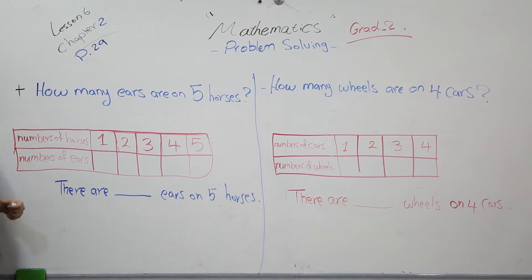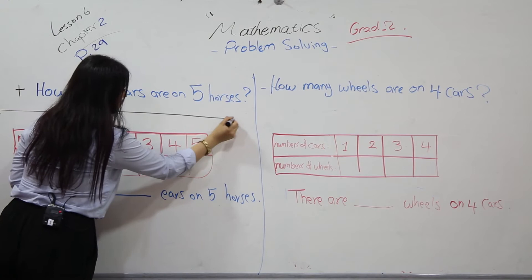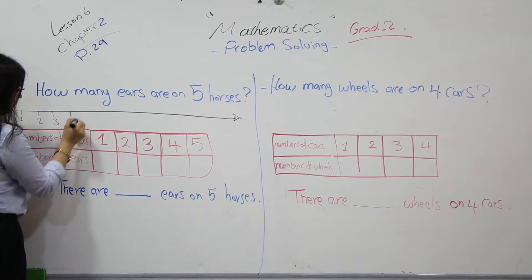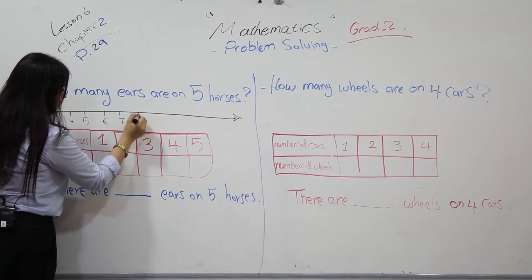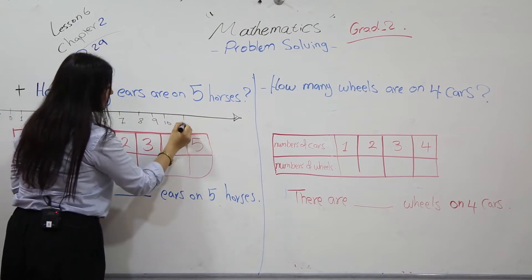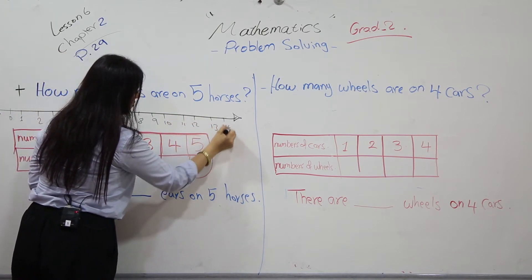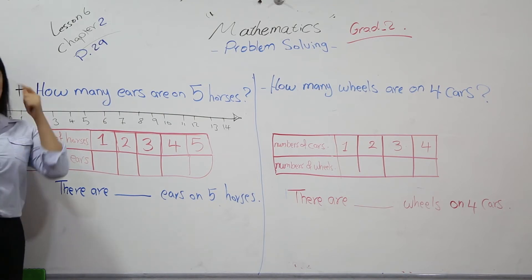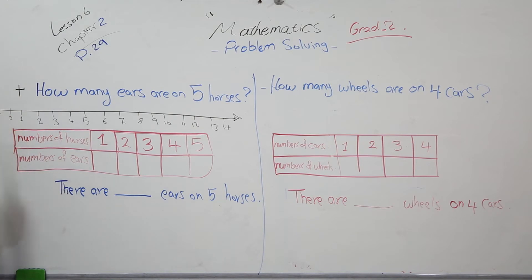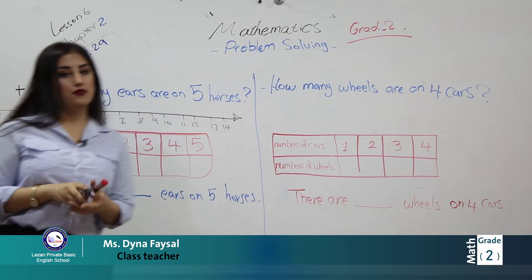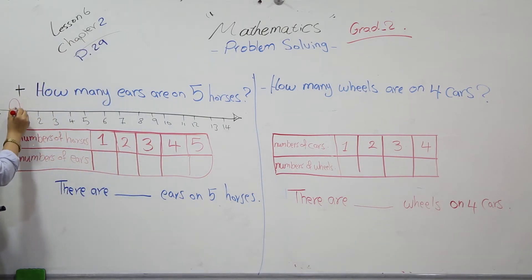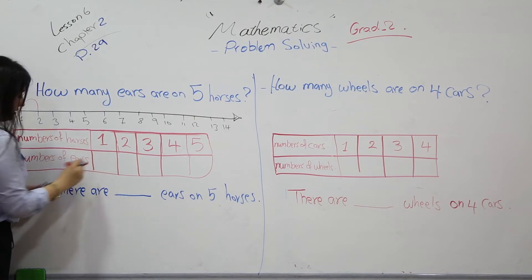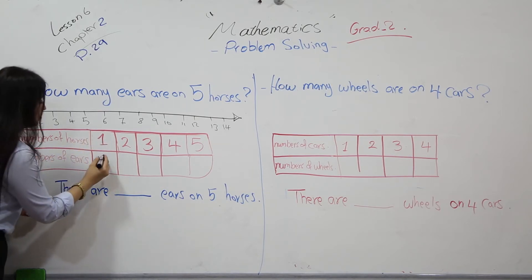Let's make a number line. We start from zero: 0, 1, 2, 3, 4, 5, 6, 7, 8, 9, 10. If we have one horse, we jump two times because one horse has two ears. We start from zero — one jump, two jumps — one horse has two ears.